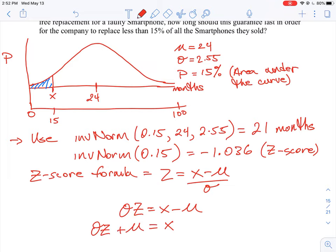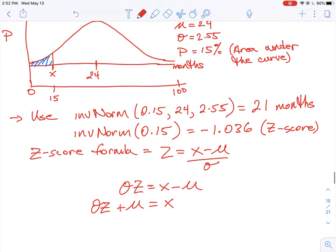So this is the rearranged formula that we could use to figure this out. So we can just plug in what our standard deviation here is. It's 2.55. We know our Z score is negative 1.036. And then we also know our average for the data set there is 24, and that will give us X. And then if we take that down to the same value, we should get approximately 21 months rounded out to the nearest month.